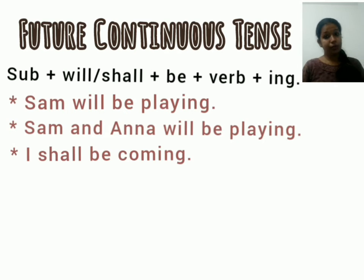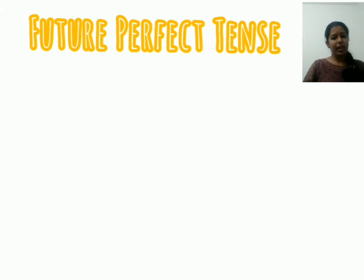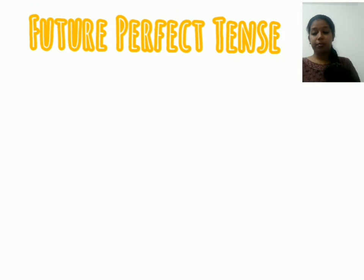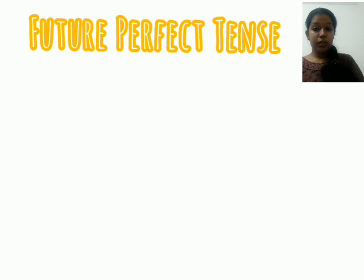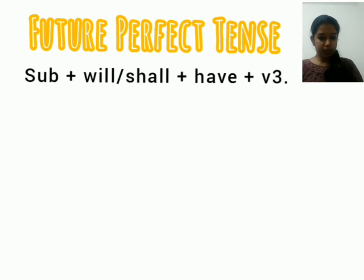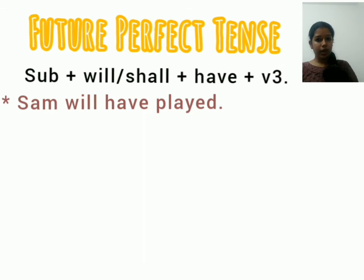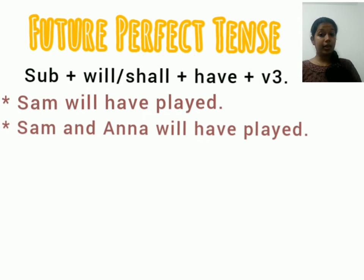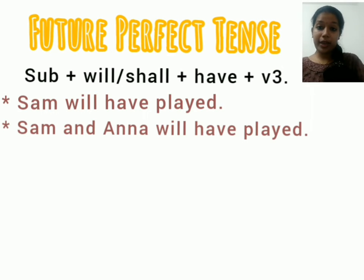We have two more tense forms: future perfect and future perfect continuous. For future perfect, the format is: subject plus will or shall plus have plus V3 (past participle). For example, Sam will have played, or Sam and Anna will have played. Note that we don't need has in future tense.